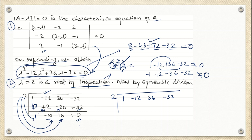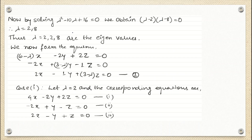One root already found is lambda equals 2. The next step is to build a reduced equation where the highest power of lambda is 2 — one less than 3. Using the synthetic division results: 1 times lambda squared, minus 10 times lambda, plus 16 equals zero. This factors as lambda minus 2 times lambda minus 8 equals zero, since 2 times 8 equals 16. So we have roots 2 and 8 from this, plus the earlier root lambda equals 2, giving three total roots: 2, 2, and 8.